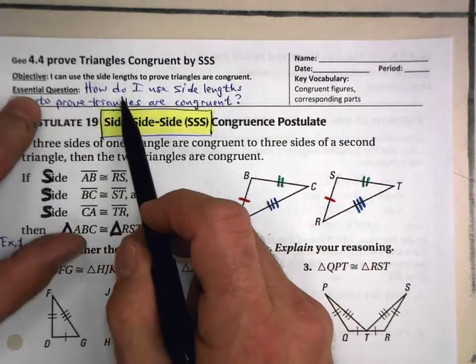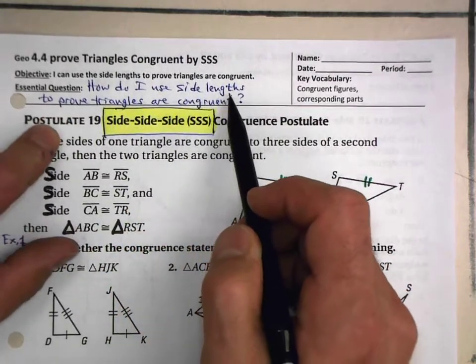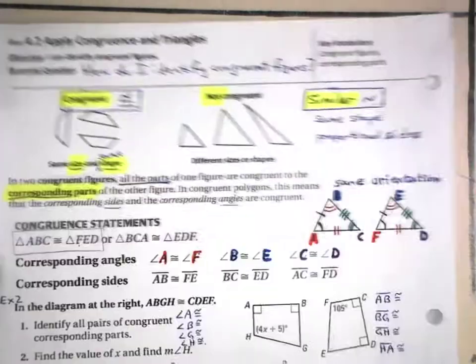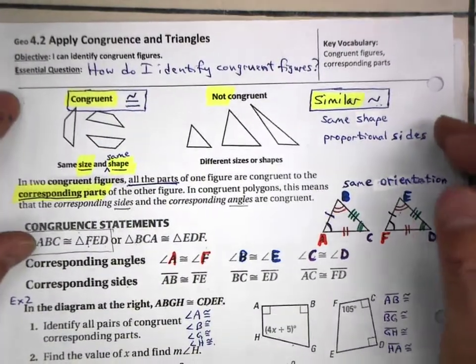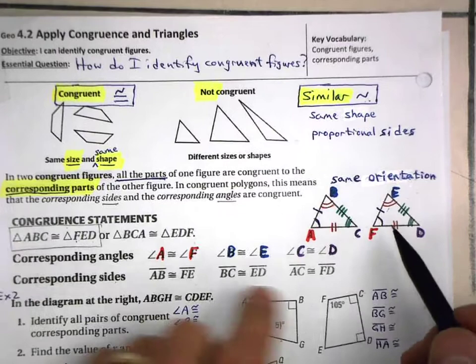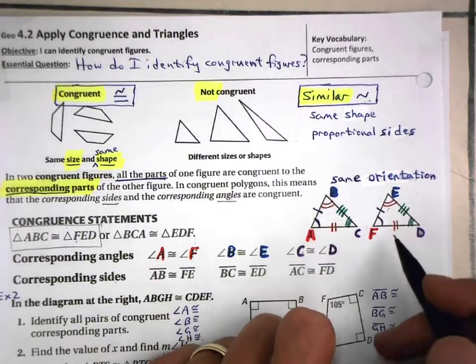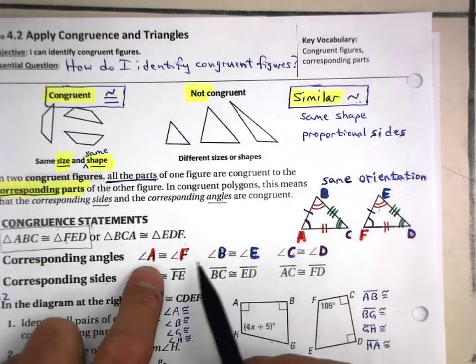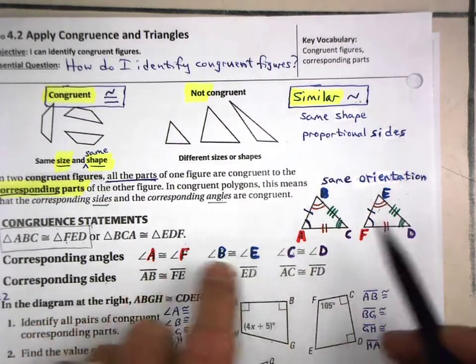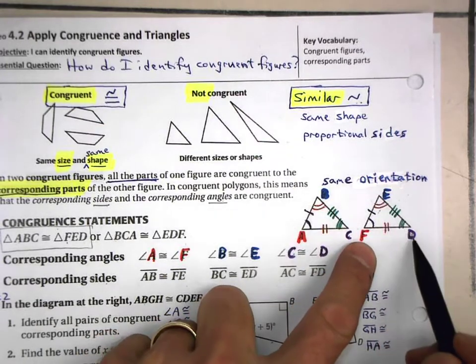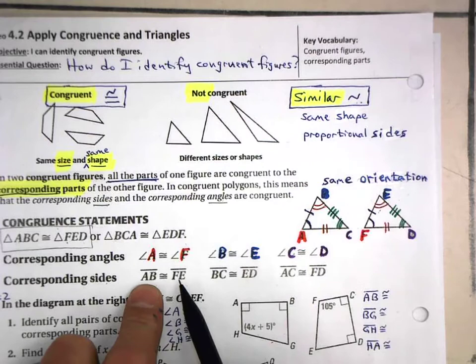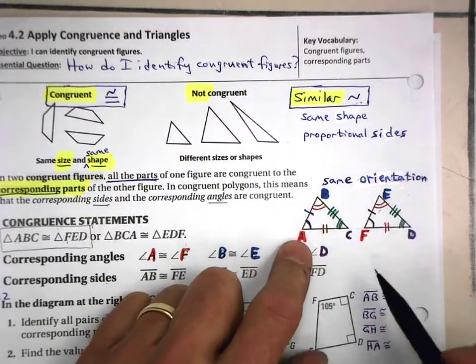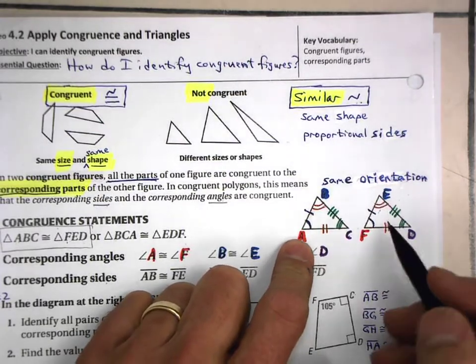Our essential question is how do I use the side lengths to prove that triangles are congruent? You will remember back here in 4.2 we said that in order to prove, or what it meant when we said that two triangles are congruent is that the three pairs of corresponding angles are congruent and also the three pairs of corresponding sides are also congruent. So that's six different things that we have to compare.